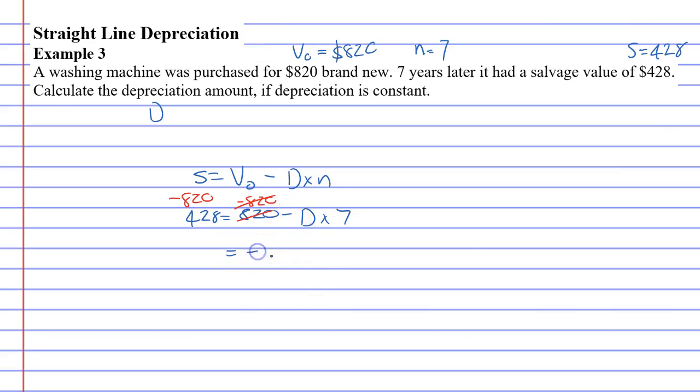And on this side, you're actually going to get a negative solution. 428 minus 820 is negative 392. Now because we've got a negative on both sides, you can cancel them out.